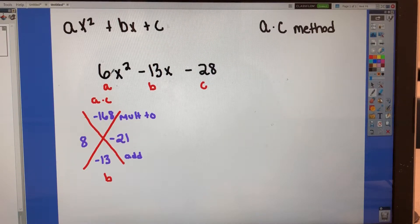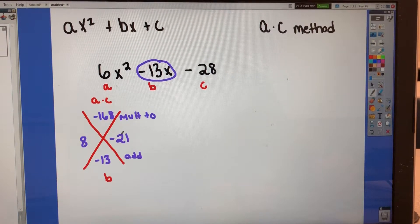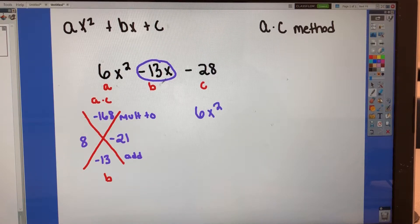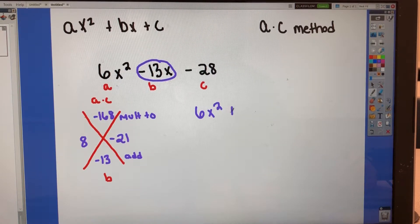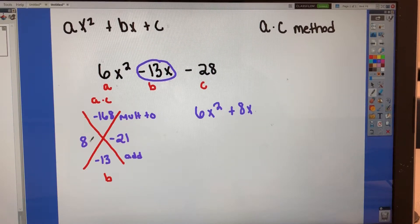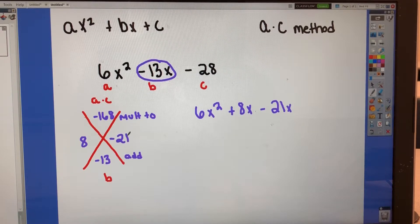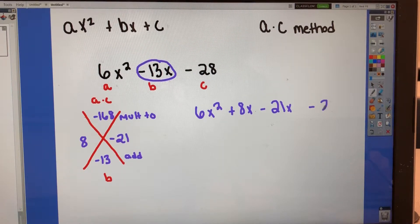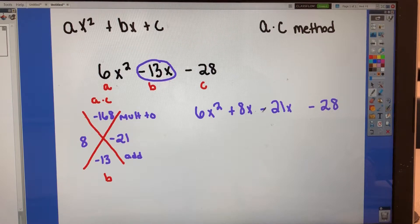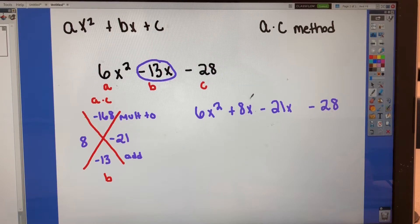Now what we're going to do is we are going to split the negative 13x into these two terms. So I'm going to have 6x squared, and then this is going to split to a positive 8x, and that comes from this 8 here, and a negative 21x, which comes from this negative 21 here. And then I bring down the negative 28. So what I did was I took the 13 and I split it into the two factors. So if I were going backwards from foiling, this would be my final step right before I get my answer where I would combine these two like terms.